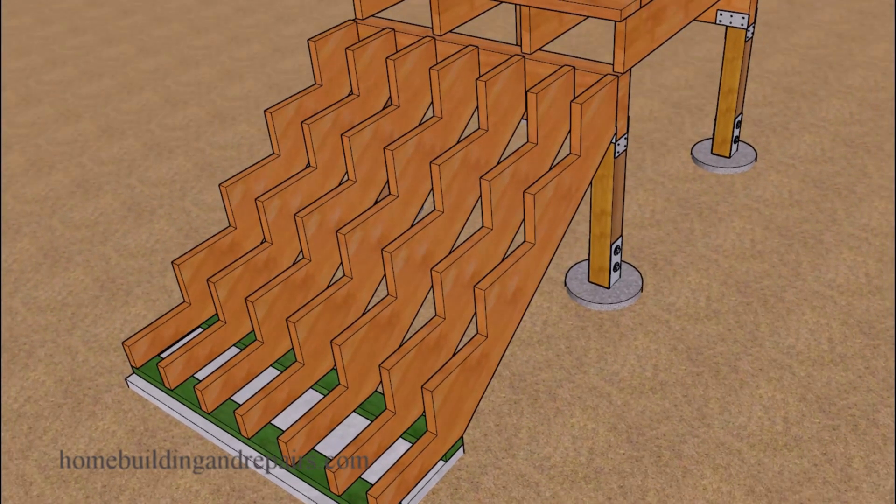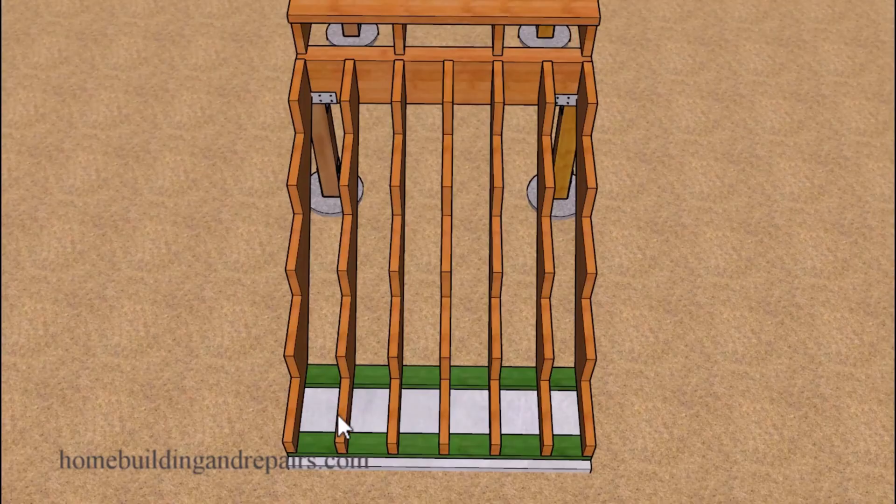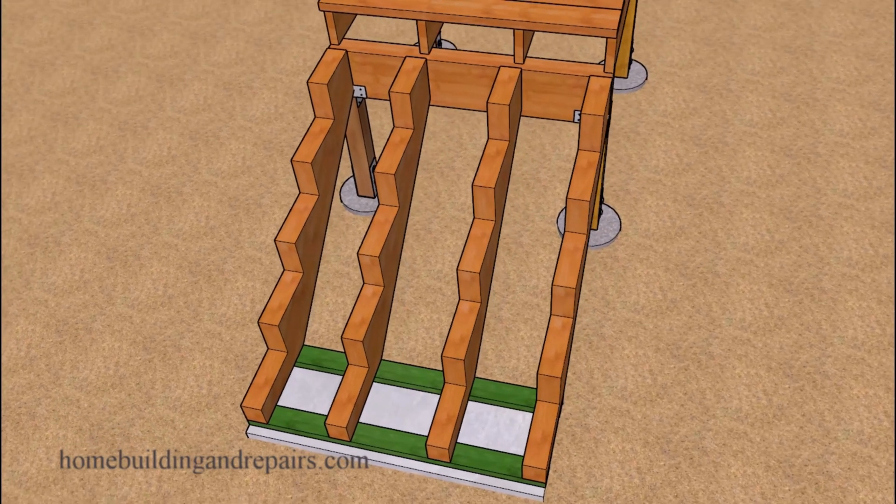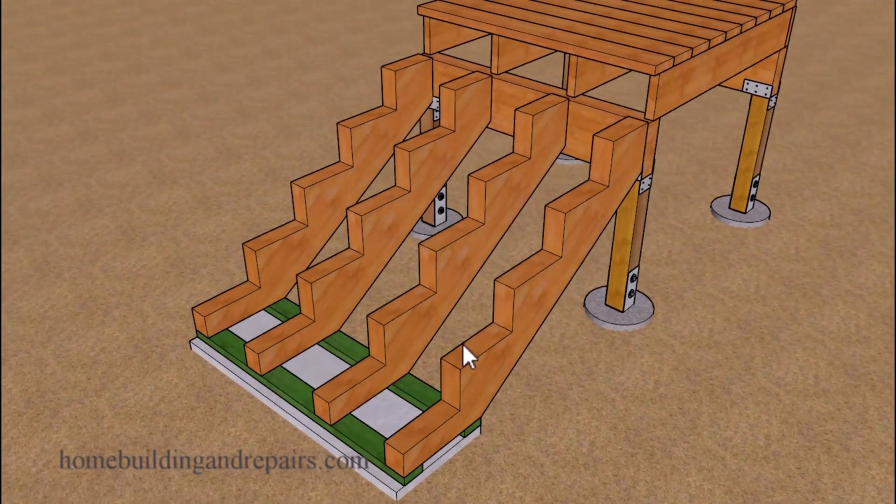Or instead of doubling up the stringers, you can just simply lay them out a little different. However, something like this might require a few more nails and could make it difficult to create a straight line between the other stringers so that you don't end up with squeaking stairs. Or you can use larger lumber. You can use lumber that's going to be wider or taller.